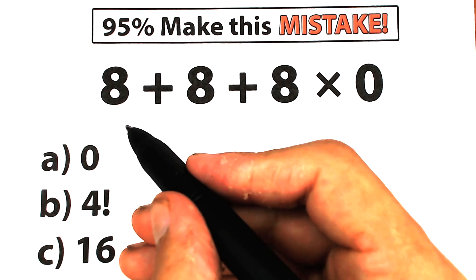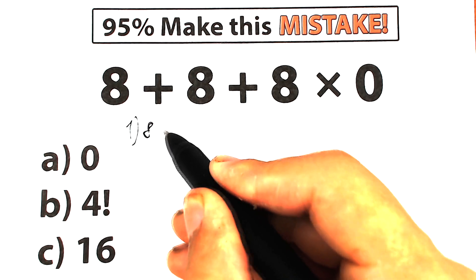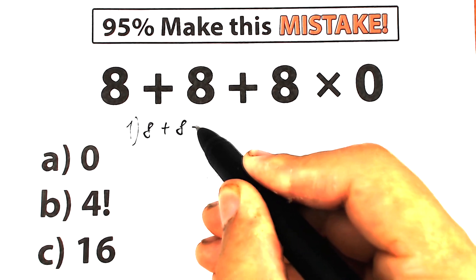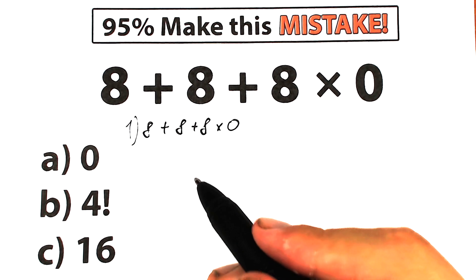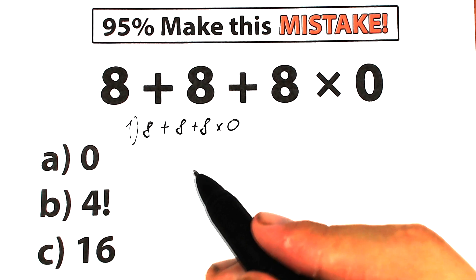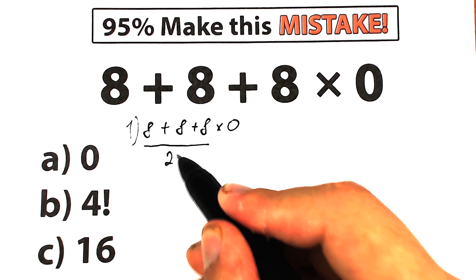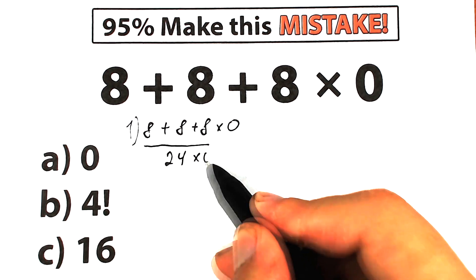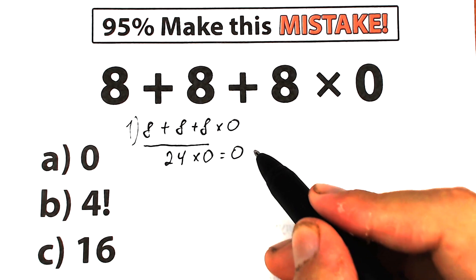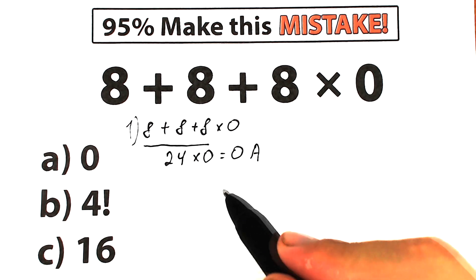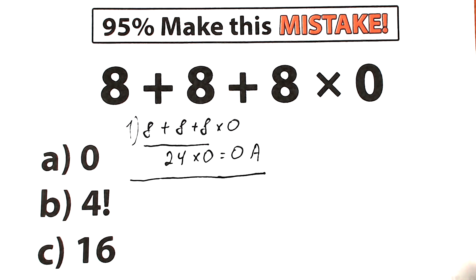A lot of students solve this challenge like this: they have 8 plus 8 plus 8 times 0, and without caring about order of operations, they go strictly left to right — 8 plus 8 plus 8 equals 24, then 24 times 0 equals 0. A lot of students say option A is the correct answer and move on. But in maths, it's really important to know about order of operations.